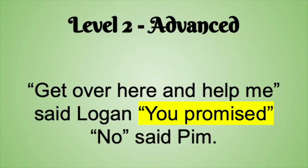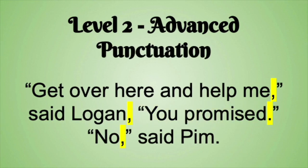For our example in Level 2, we have added some words from Logan. After he has said 'get over here and help me,' he keeps going and says 'you promised,' before Pim responds. For advanced punctuation, we need to know that preceding and ending speech, you must always have punctuation — this is either a full stop, comma, exclamation point, or a question mark.